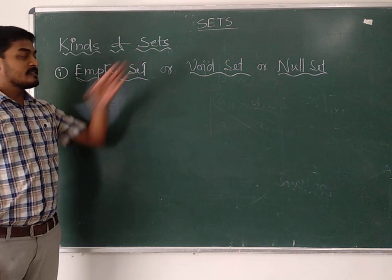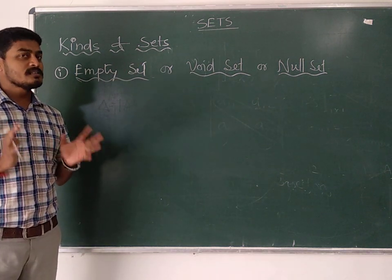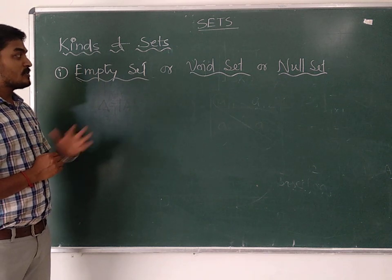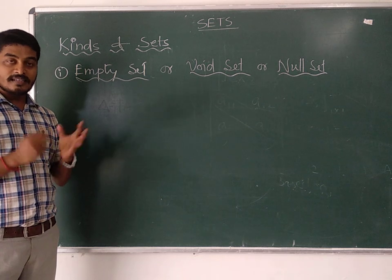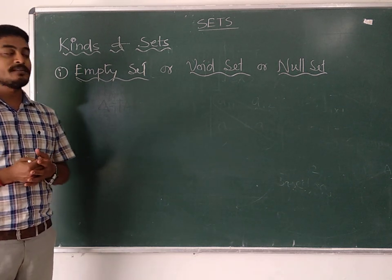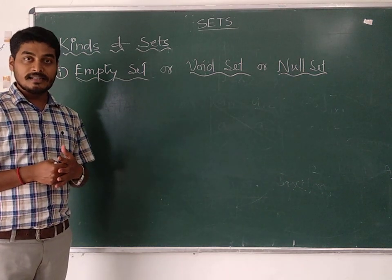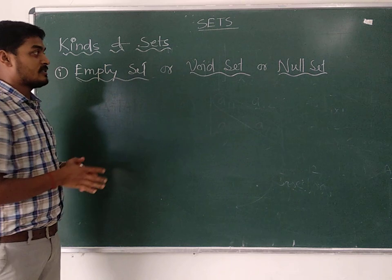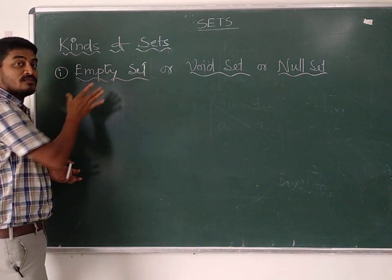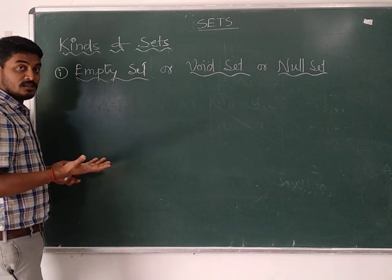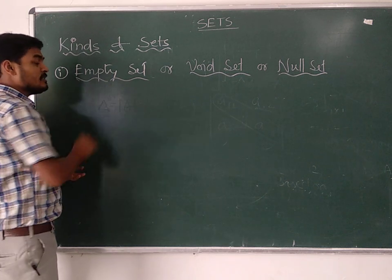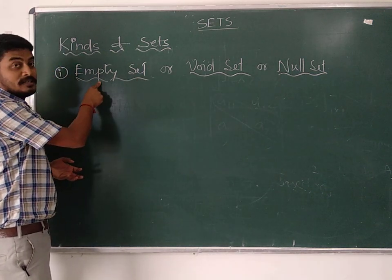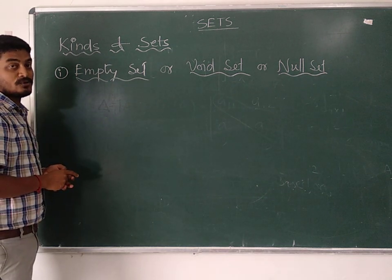First of all, what is a set? A set is nothing but a collection of objects or elements — it is a well-defined collection which can be defined properly. Depending upon the number of elements in that collection, sets are categorized in different ways. An empty set means no elements will be there. It is a collection which does not contain any element, and that type of collection is known as an empty set.